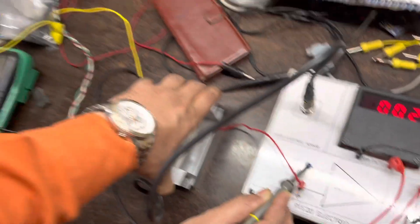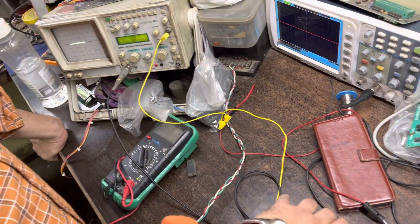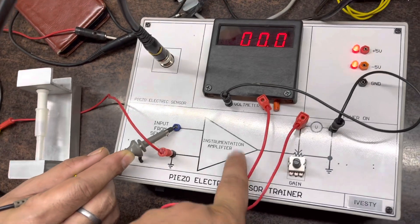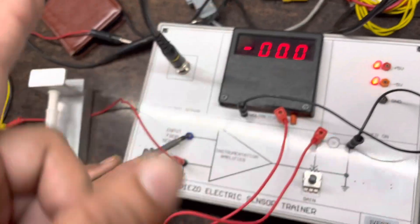whenever there is an impact, you can see we have connected this to the kit and the input of the sensor is going to an instrumentation amplifier circuit, which is then going to a voltmeter to show us a reading.